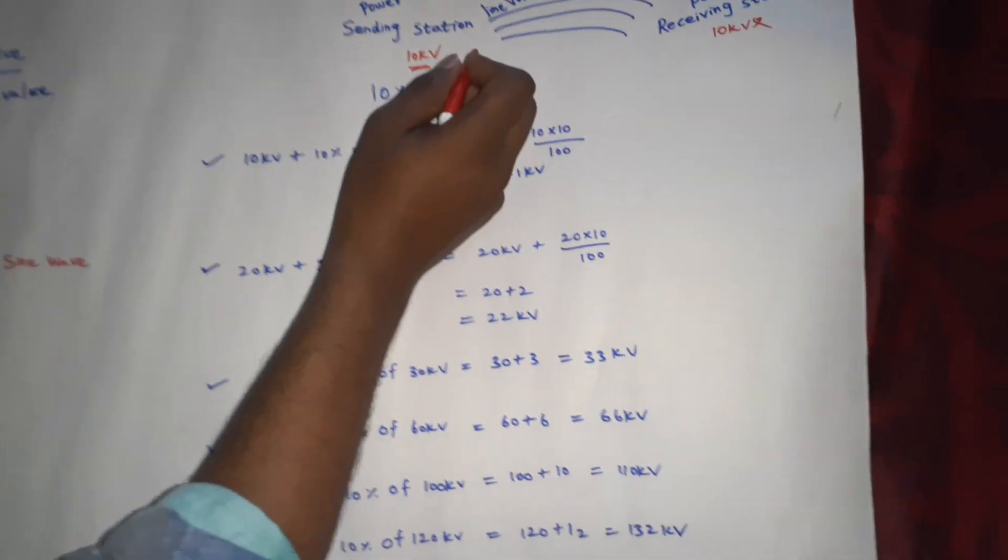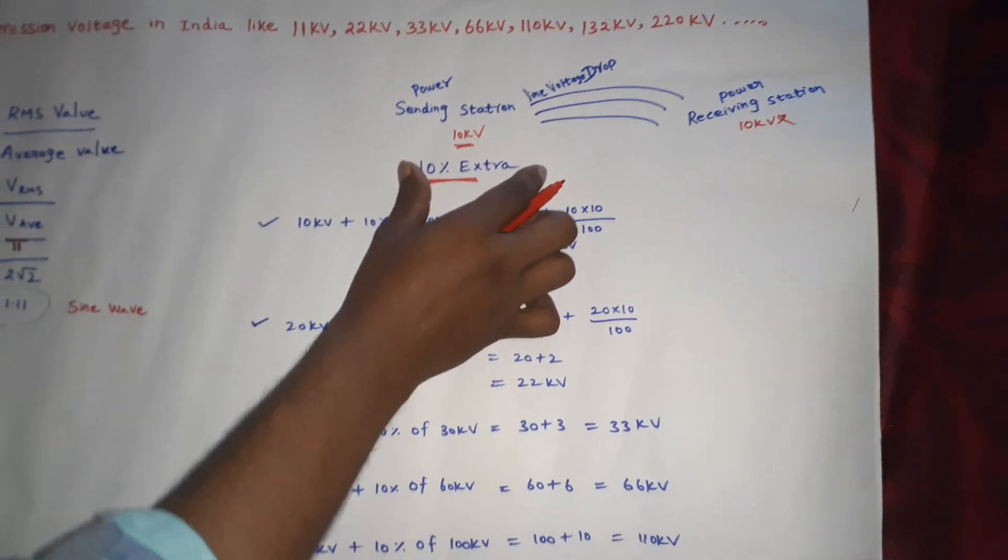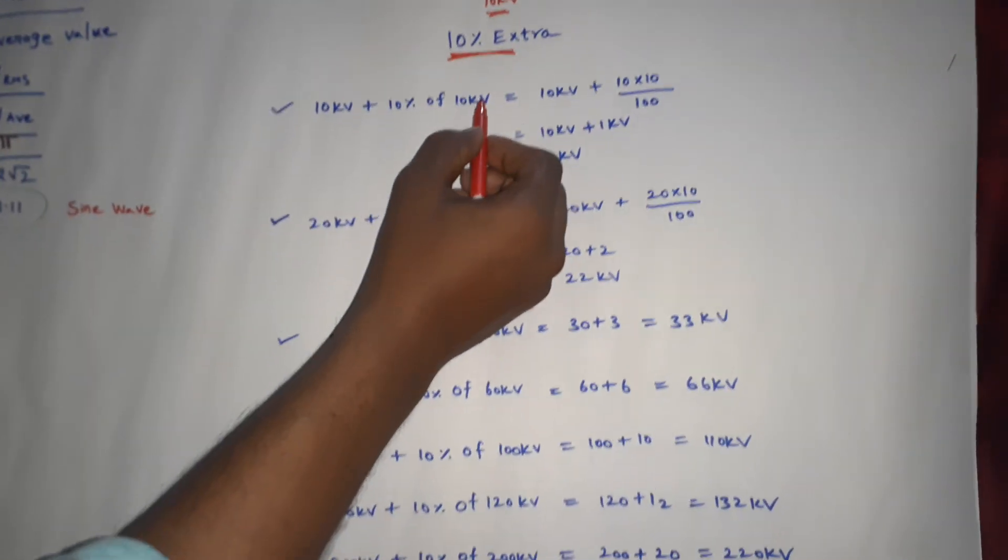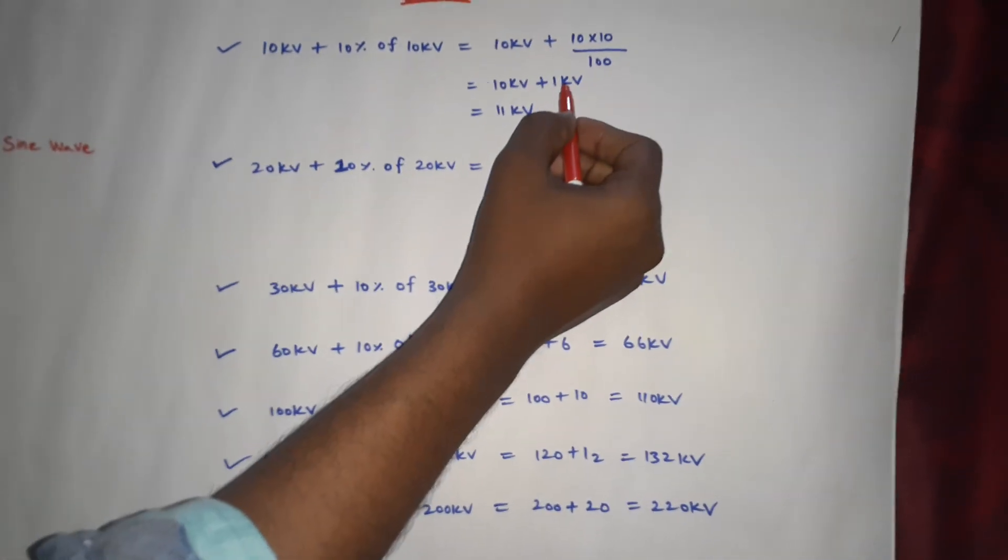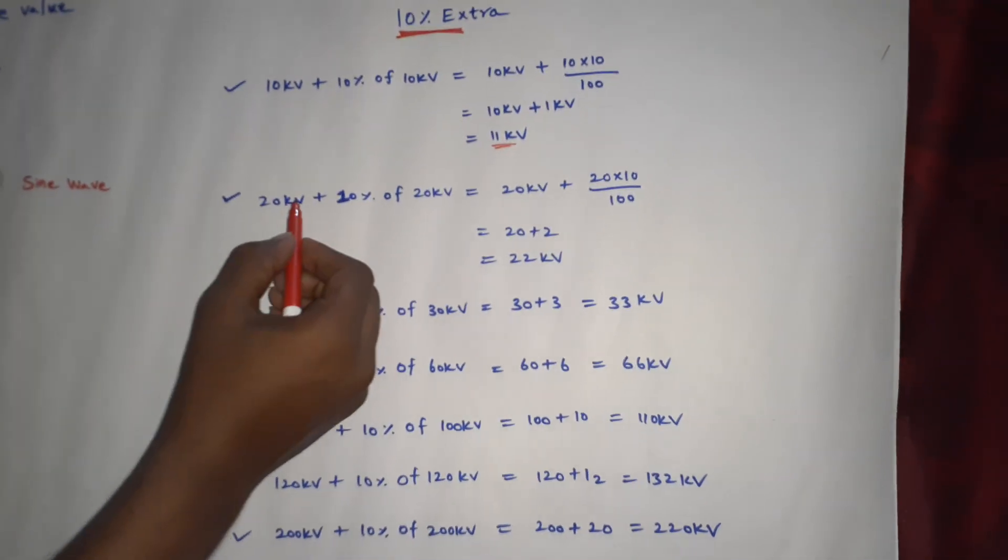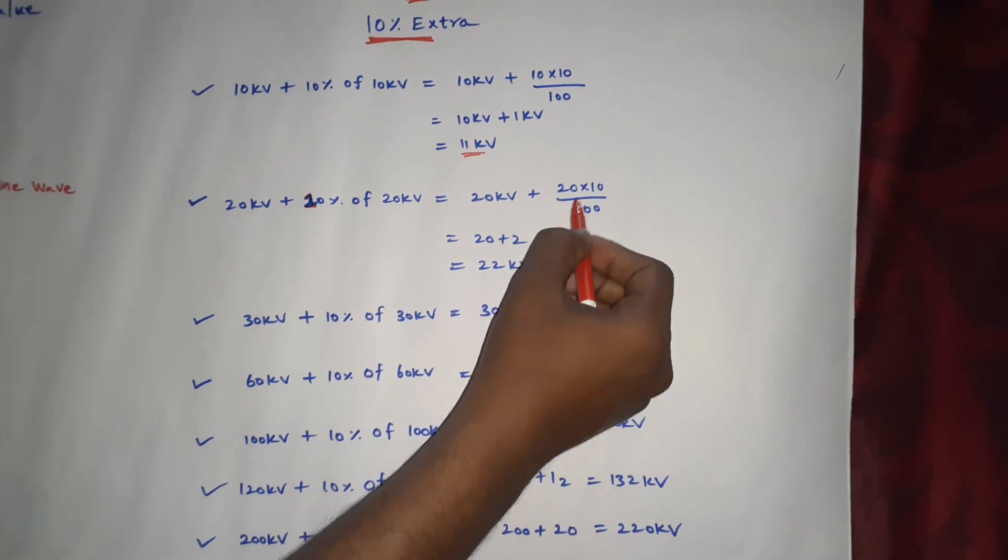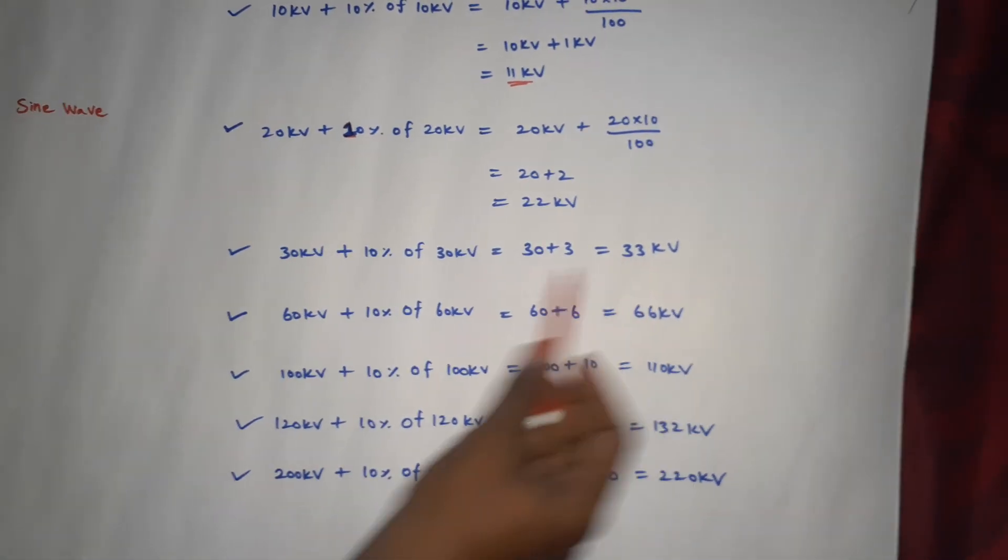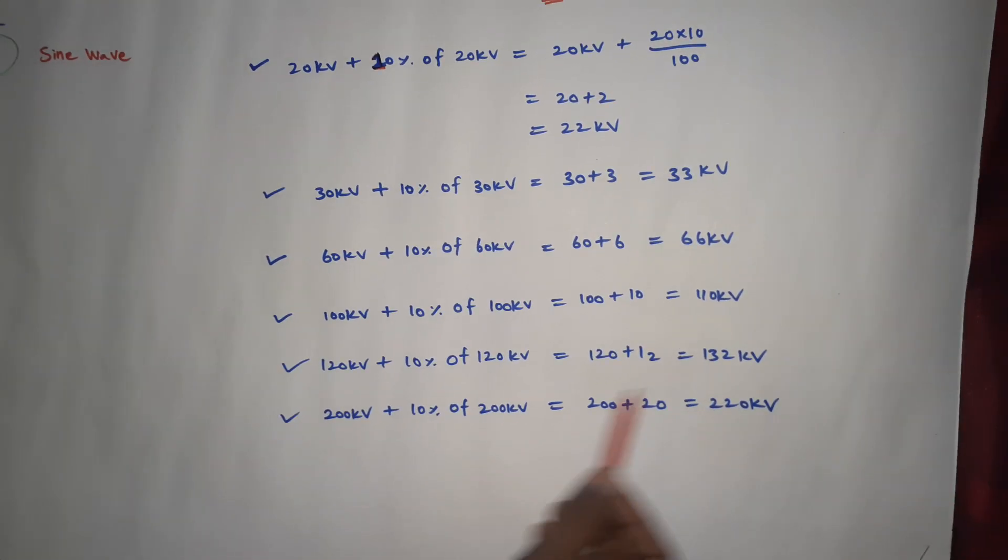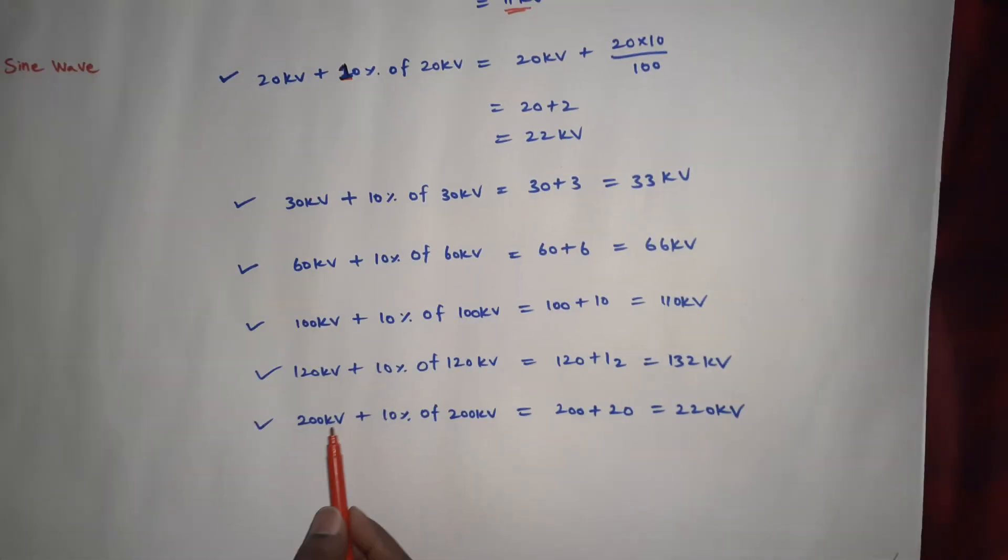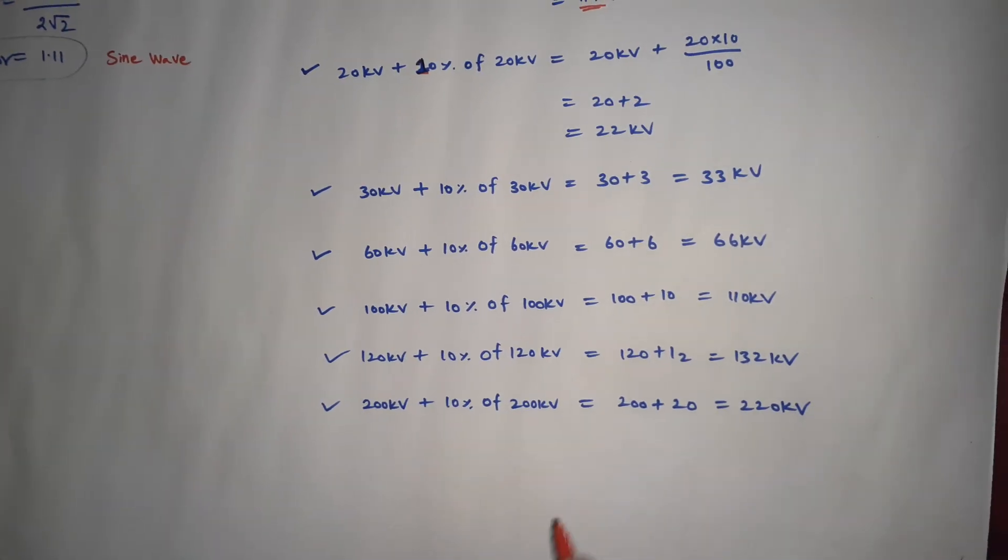If we take 10%, 20kV plus 10% of 20kV equals 20 plus 2 equals 22kV. 30kV plus 10% equals 33kV. 60kV plus 10% equals 66kV. 100kV plus 10% equals 110kV. 120kV plus 10% equals 132kV.